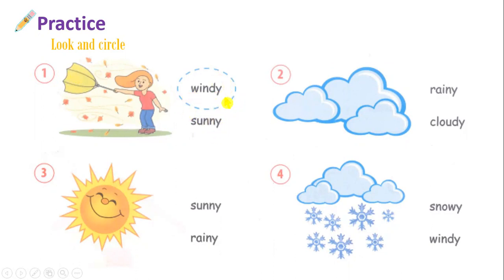Windy, what does it mean? Gió. Sunny — nắng. Và chúng ta nhìn vào bức tranh này, chúng ta sẽ thấy ở đây trời đang thổi gió rất là mạnh, tóc cô gái đang bay, lá cũng đang bay, và cái ô của cô ấy cũng bị lật ngược. Vậy chúng ta sẽ lựa chọn từ gió là windy. So you circle windy.